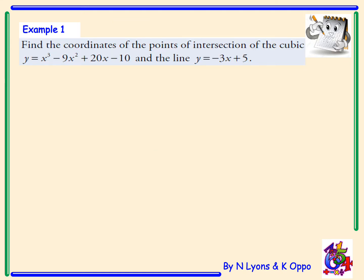Example 1. Find the coordinates of the points of intersection of the cubic y equals x-cubed minus 9x-squared plus 20x minus 10, and the line y equals negative 3x plus 5. We are going to substitute the straight line equation y equals negative 3x plus 5 into our cubic function x-cubed minus 9x-squared plus 20x minus 10.